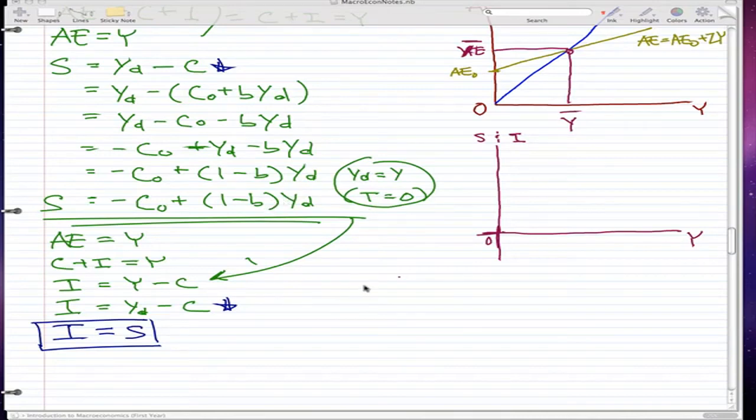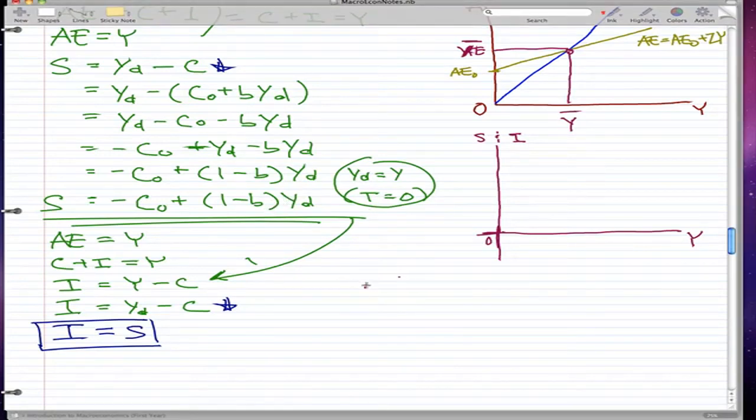So remember, I want you to remember that in a couple of videos past, I told you that in our case, investment is completely autonomous, so I is just I₀, that's it, completely autonomous.